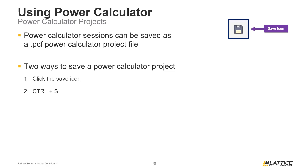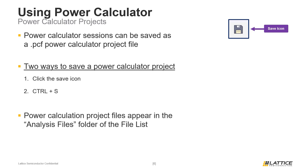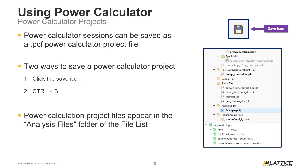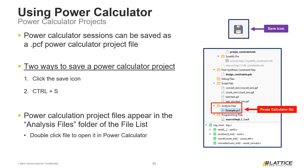Once a Power Calculator project has been saved in Radiant, it will appear in the Analysis Files folder in the File List tab, as can be seen from the figure on the slide. To open an existing Power Calculator project after it has been closed, double-click the name of the .pcf Power Calculator file for the project you want to open. Doing this will initialize the Power Calculator tool and open the project that was selected.